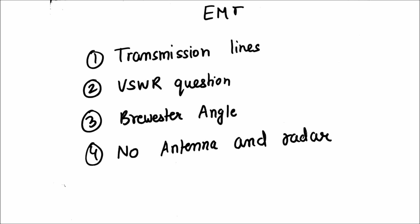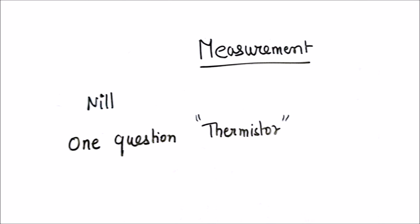Talking about the EMT part, EMT includes two three questions from transmission line, one question from VSWR and Brewster angle was also asked. Main part is that no antenna and radar question was asked. Measurement was almost nil. One question is asked from thermistor. Some temperature coefficient was asked. You can include that part in analog also. So we can say measurement was nil.